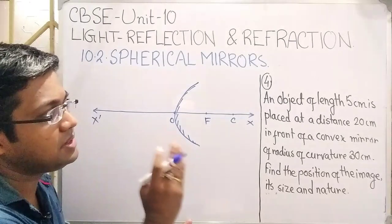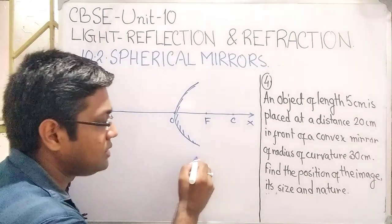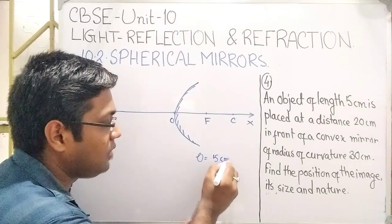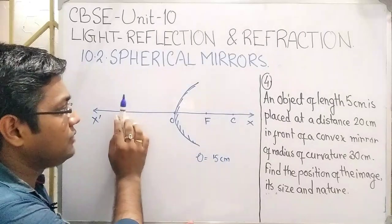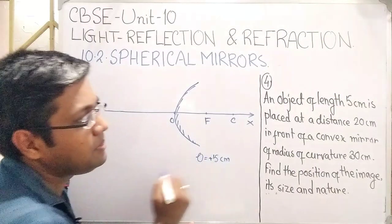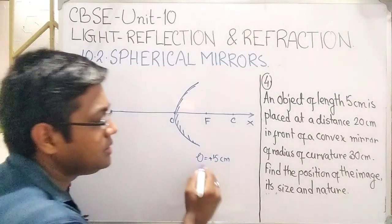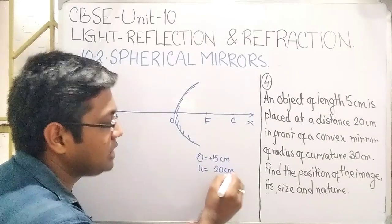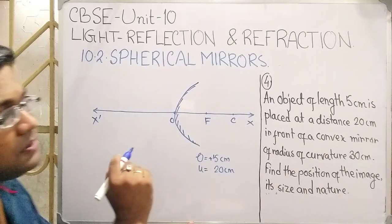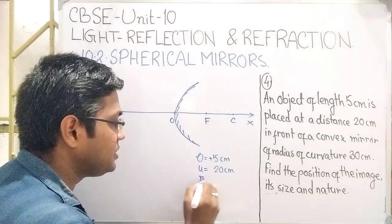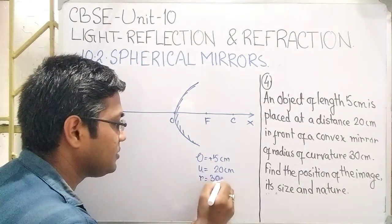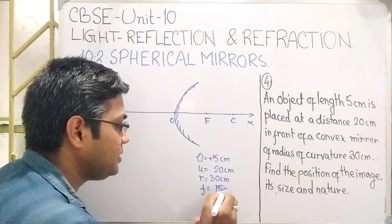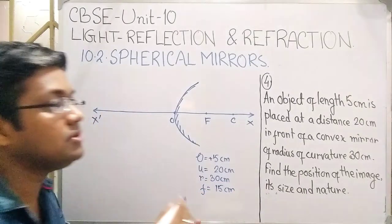An object of length 5 cm is placed. The length of the object is 5 cm. Since the object is placed on the upside, we can write it as plus 5. The object is at a distance 20 cm, so u is 20 cm. We will apply the sign convention. The radius of curvature is 30 cm, so the focal length f equals R by 2, which is 15 cm.